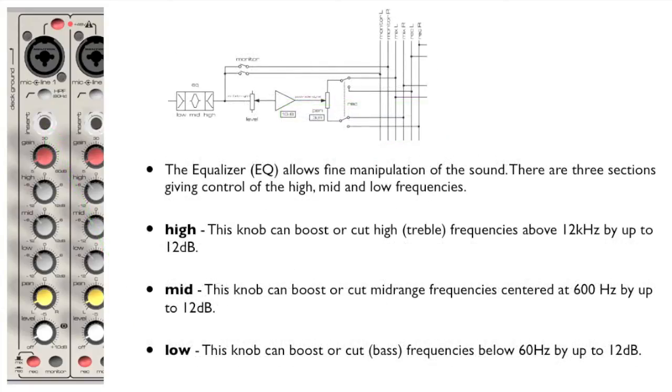The mixer includes a three-band equalizer. The high knob boosts or cuts frequencies above 12 kHz. The mid knob boosts or cuts banded frequencies centered at 600 Hz. And the low knob boosts or cuts frequencies below 60 Hz.